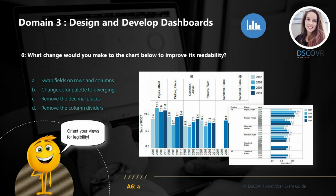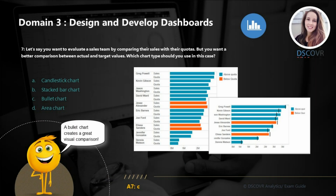All right, for question number six, let's take a look at this visualization. What change would you make to this chart in order to improve its readability? The answer here is A - one of the easiest things you can do is simply change its orientation. For question seven, let's say you want to evaluate a sales team by comparing their sales and their quotas, but you want a better comparison between actual and target values. In this scenario, a bullet chart is definitely a better option to represent this data.